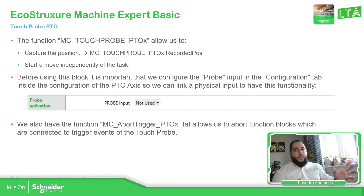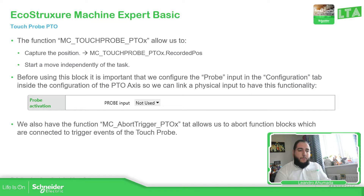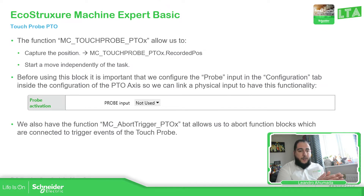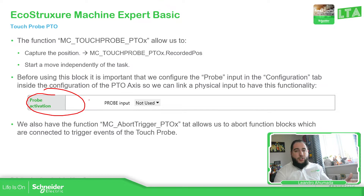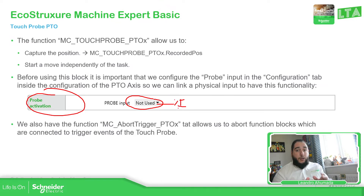This Touch Pro gives us the possibility to add an additional movement to the one that we are having, but we also have the possibility to record the actual position. The Touch Pro will be linked to a physical input in the controller. We should be able to assign this input in the configuration of the PTO. The Proof Activation is in the PTO configuration. When you select Not Used, you should be able to see all the %I inputs that you have available for the controller that you're using.